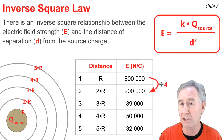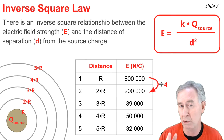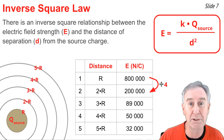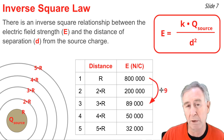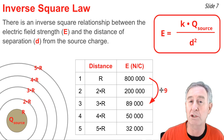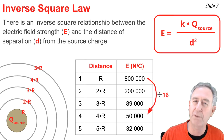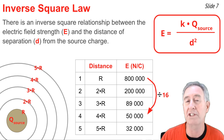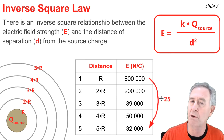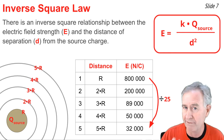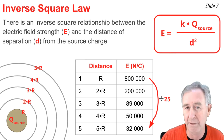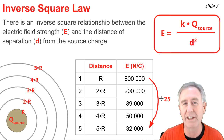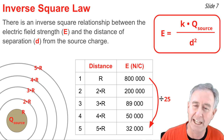Looking at the second row of the table, the separation distance is two times further away and the electric field strength is one-fourth as large. The third row has three times the separation distance and an electric field value that is one-ninth as large. The fourth row is four times the separation distance and an electric field strength that is one-sixteenth as much. Finally, the last row has a separation distance five times bigger and an electric field strength that is one-twenty-fifth that of the first row. These values represent the inverse square relationship between E and d.